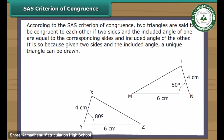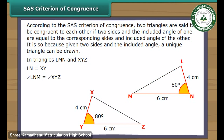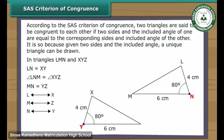SAS criterion of congruence: according to the SAS criterion, two triangles are said to be congruent to each other if two sides and the included angle of one are equal to the corresponding sides and included angle of the other. It is so because, given two sides and the included angle, a unique triangle can be drawn. In triangles LMN and XYZ, side LM equals side XY, angle LMN equals angle XYZ, and side MN equals side YZ. Vertex L corresponds to vertex X, vertex M to vertex Z, vertex N to vertex Y. Therefore, triangle LNM is congruent to triangle XYZ.